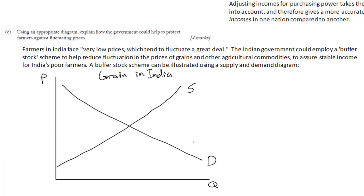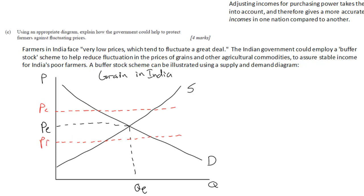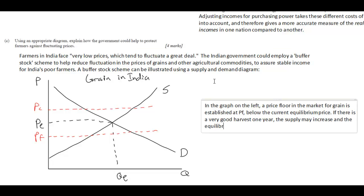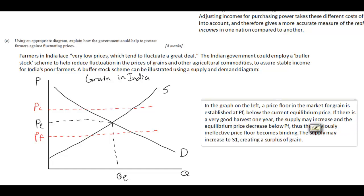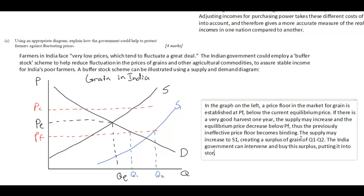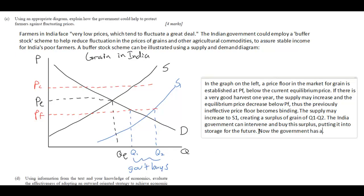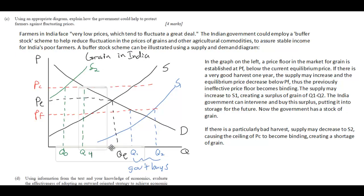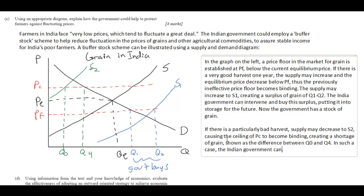The buffer stock scheme is a system of price controls in which a government sets up an acceptable range of prices for a particular commodity — in this case, grain in India, whose prices tend to fluctuate a lot in the free market. The government sets a price ceiling above the current equilibrium and a price floor below the current equilibrium. If the market price rises above the price ceiling, the ceiling becomes effective and the government intervenes to keep the price low. If the price falls below the price floor, the floor becomes effective and the government intervenes to keep the price high. This assures stable prices and a stable income, improving the standard of living for poor farmers in India.